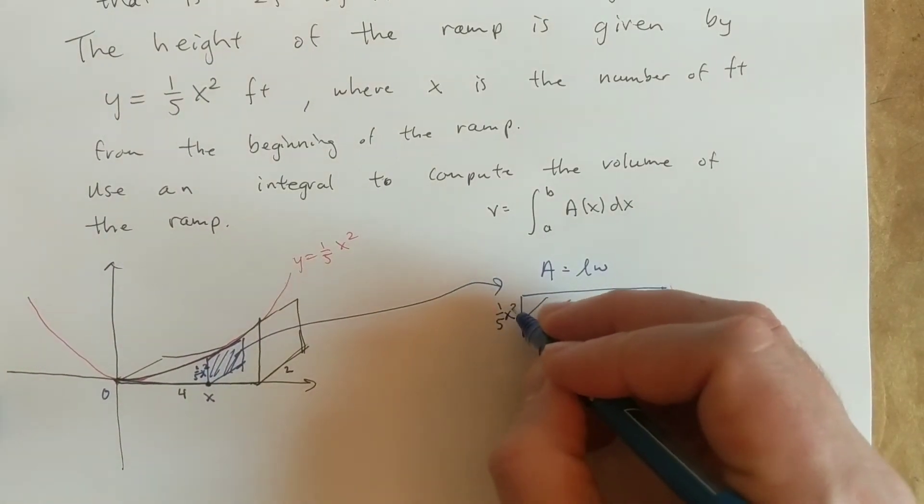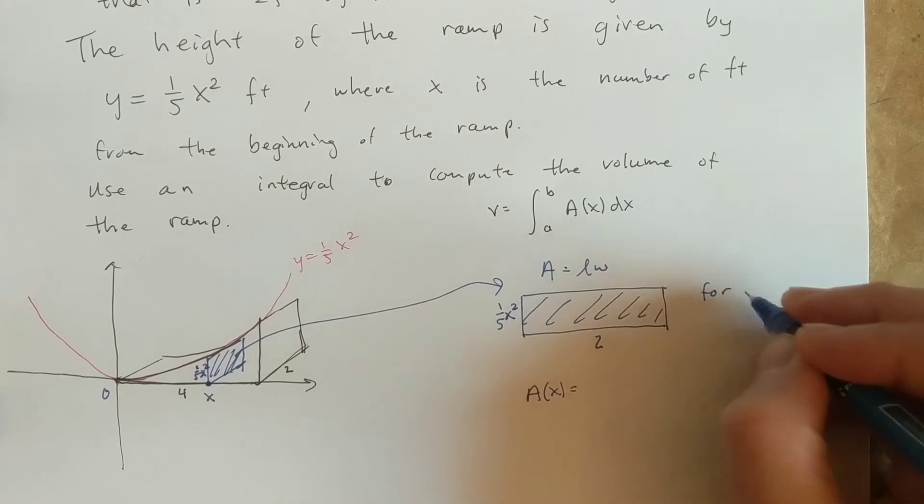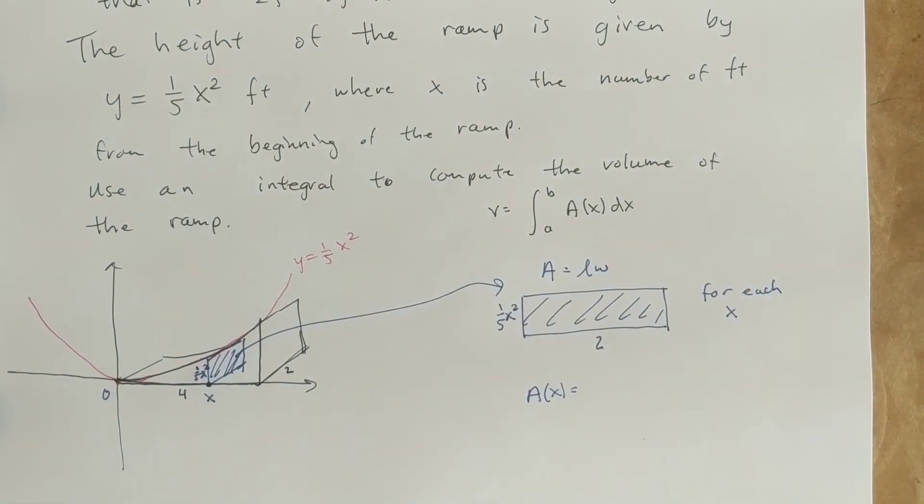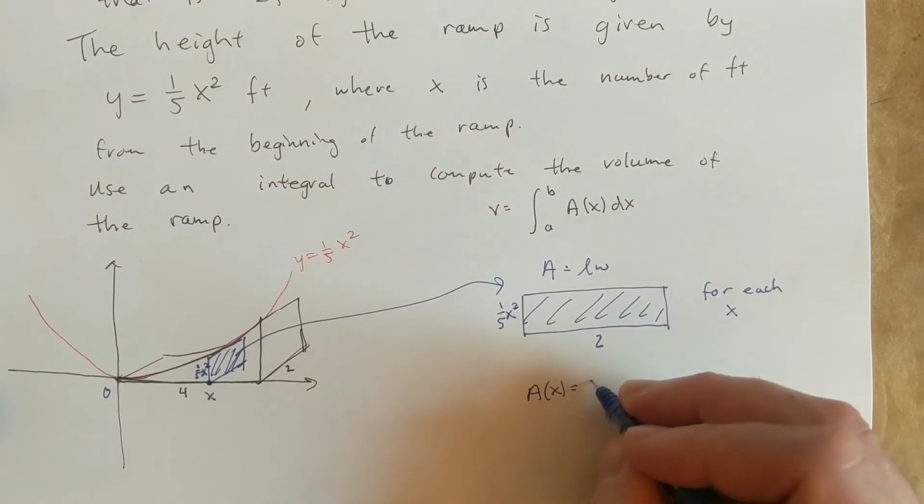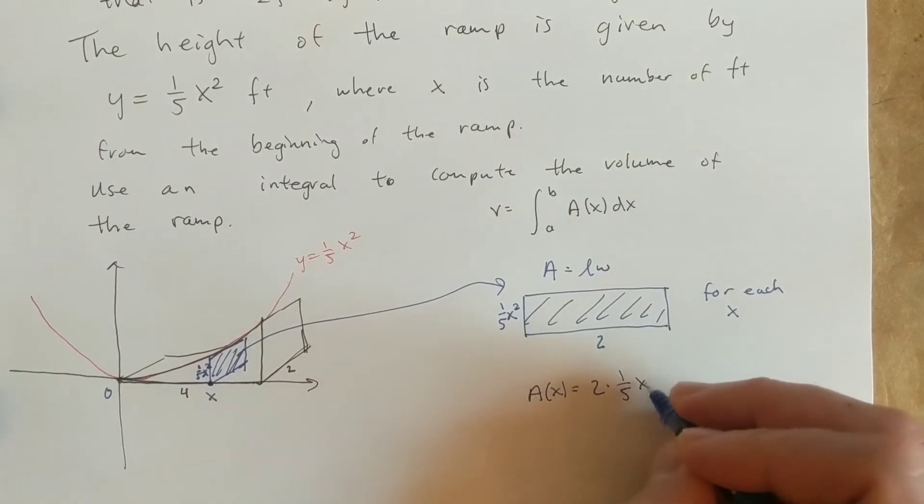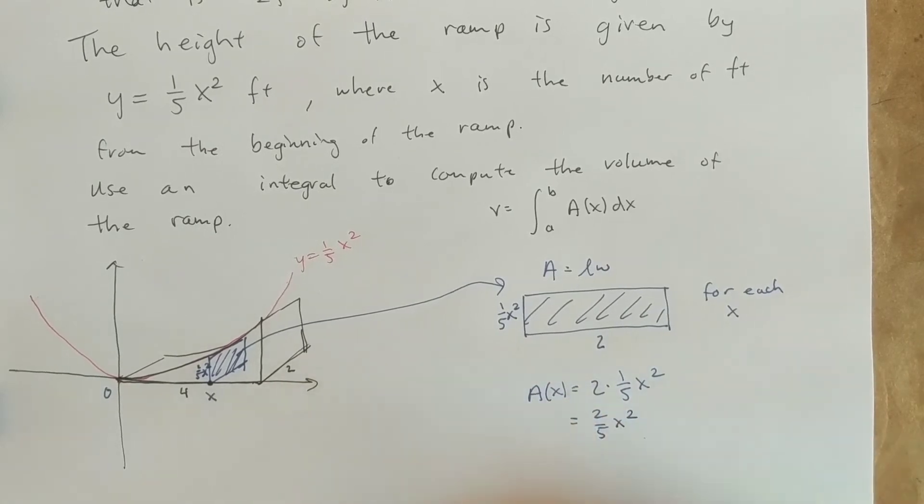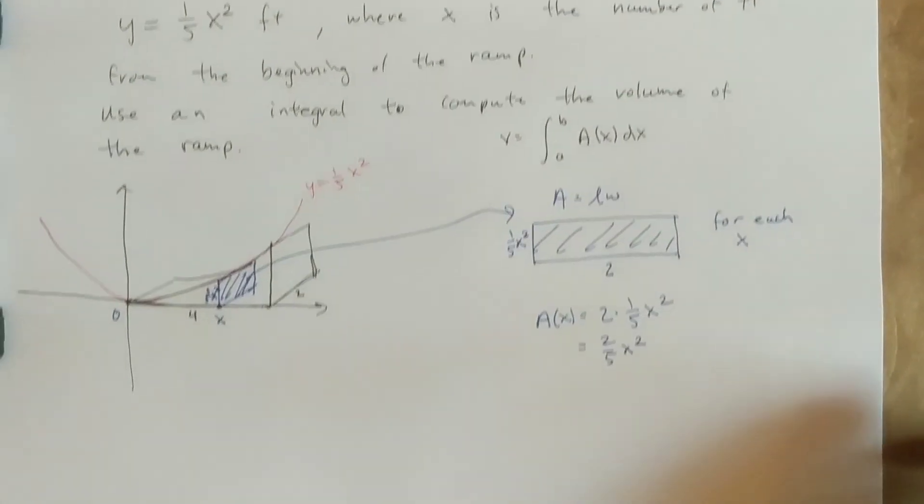And so at each value of x, so I'm going to write for each x over here, we have this. And so the area is just going to be base times height, so two times one-fifth x squared. Or if we simplify this a little bit, two-fifths x squared. So that's the function we're taking the integral of.